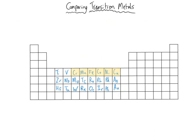The transition elements are metals with similar properties, but these properties are dramatically different to other elements considered to be metals — particularly those of Group 1, the alkali metals. In terms of physical properties, the alkali metals float in water because they are low density, whereas the transition metals are high density.